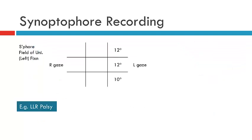Here we see an example of a synoptophore recording where field of uniocular fixation has been performed. What we can see here is the orthoptist has only selected to map the limitation in left gaze because this is where the limitation exists. There's no need to look at all positions of gaze.